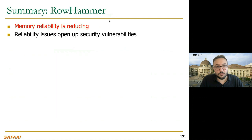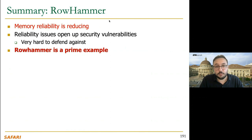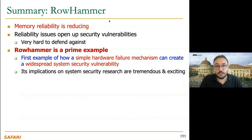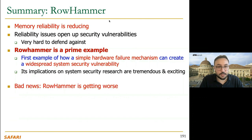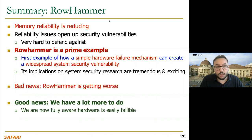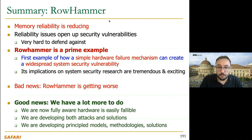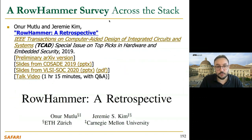In conclusion, memory reliability is reducing. Reliability issues open up security vulnerabilities that are very hard to defend against. RowHammer is a prime example — the first example of how a simple hardware failure mechanism can create a widespread system security vulnerability, with tremendous and exciting implications on system security research. There is bad news: RowHammer is getting worse. But there is also good news: we have a lot more to do. We are already fully aware that hardware is easily fallible, and we are developing both attacks and solutions, as well as principled models, methodologies, and solutions.